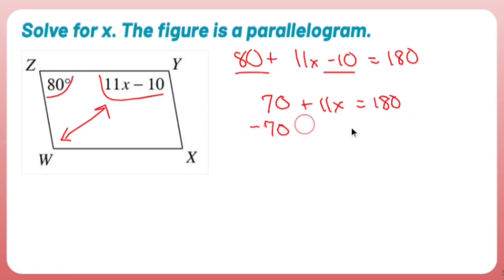Subtract 70 from both sides, subtract 70 from both sides because it's a two-stepper. 11x is equal to 110.